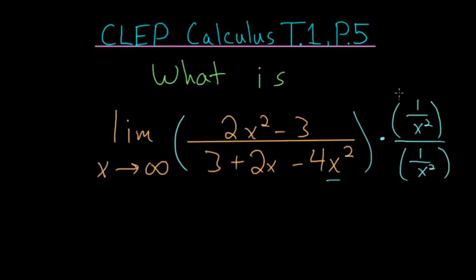And we do this so that we get the limit as x approaches infinity. Let's first distribute this to the numerator. And 2x squared times 1 over x squared, the x squareds cancel and we're left with 2.